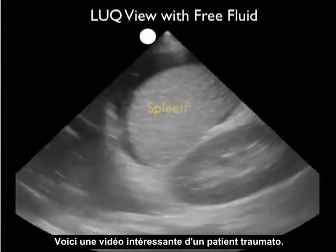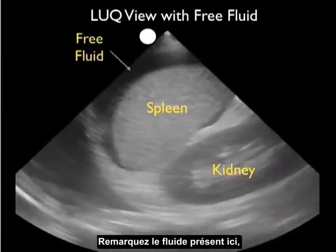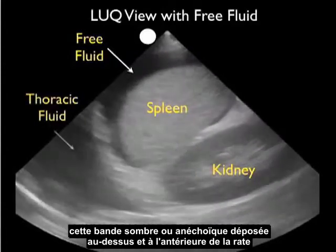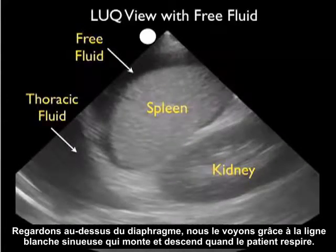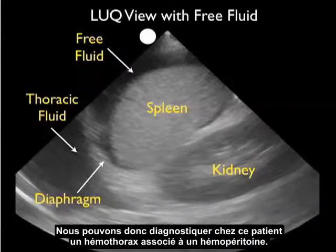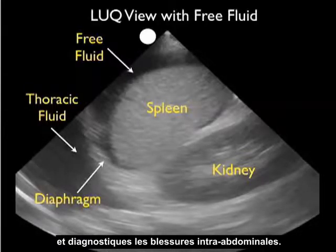Here's an interesting video clip from a trauma patient. Looking at the left upper quadrant, we delineate the spleen and kidney and notice the dark anechoic fluid stripe layering superior and anterior to the spleen. But look above the diaphragm — the curving white line moving up and down as the patient breathes — where we notice a dark fluid collection within the thoracic compartment. We're able to diagnose an associated hemothorax in addition to the hemoperitoneum, demonstrating that the left upper quadrant view is also helpful for evaluating the thoracic compartment.